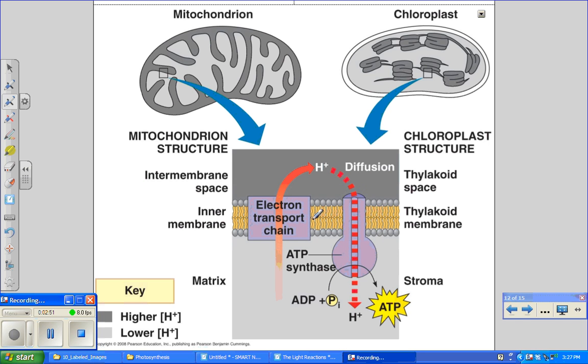But what's different? In chloroplasts, the source of high energy electrons is water. In cell respiration, the source is organic molecules like sugars. Another difference is that chloroplasts use light energy to drive electrons from water to the electron transport chain. Mitochondria use electrons that are harvested from the sugars that we eat.